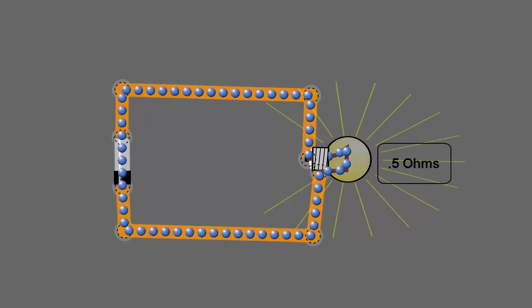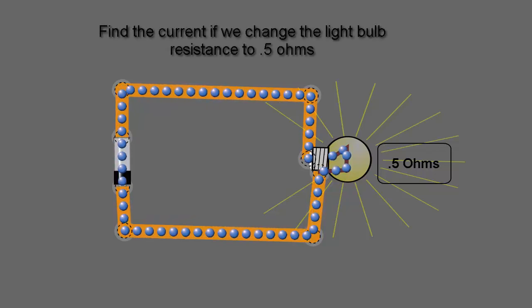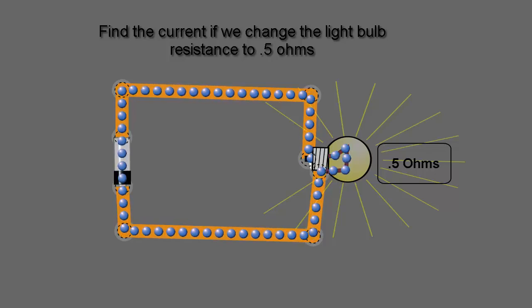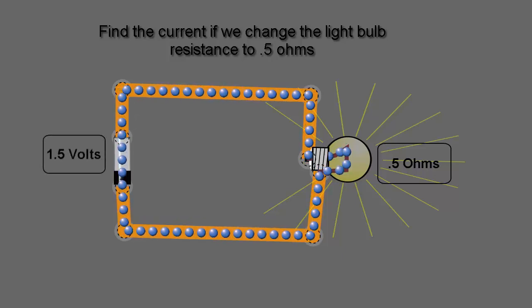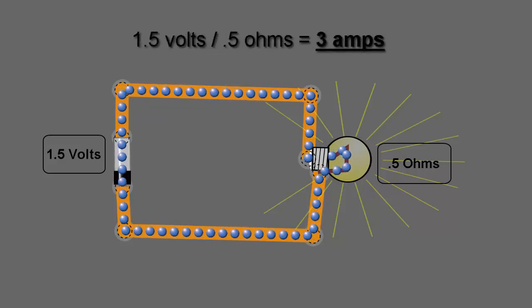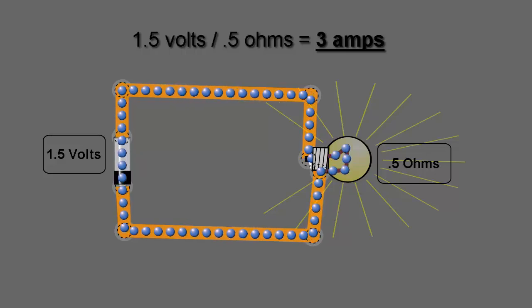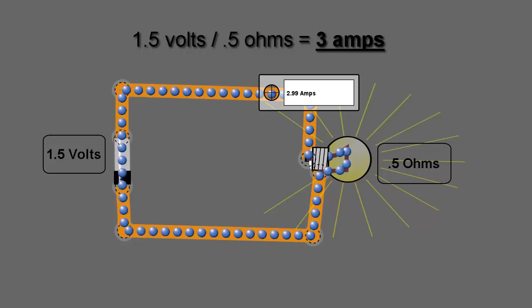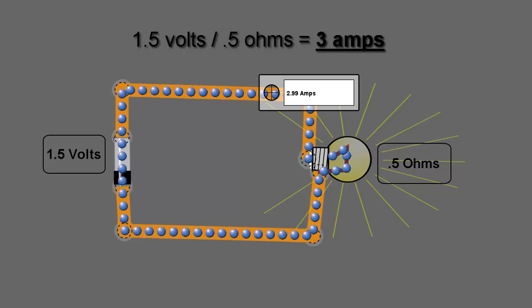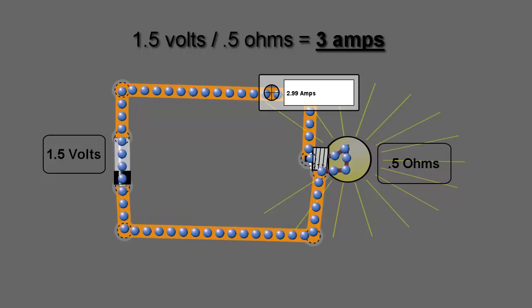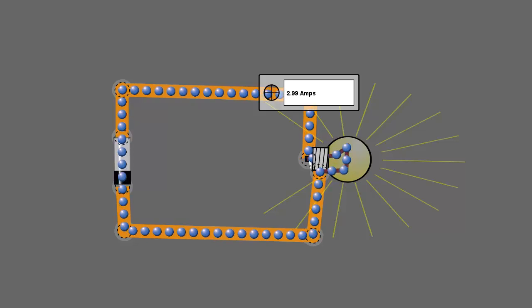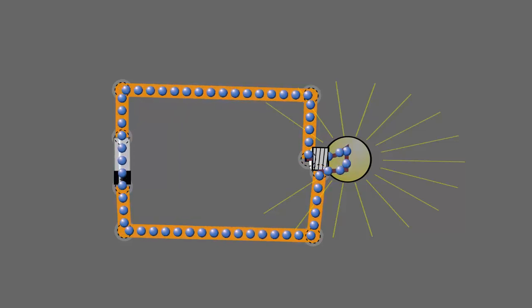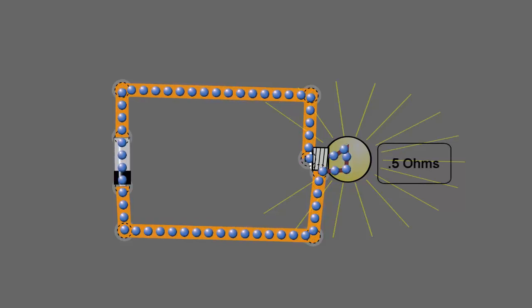So the next question is, what happens if we take the resistance of the light bulb down to 0.5 ohms? Well, if we do that, and I've already done it here, if we take this down to 0.5 ohms, then we have 1.5 volts from the battery divided by 0.5 ohms, then that should give us 3 amps. So let's measure it and see what we come up with. And if we measure it, we see the simulator comes up with 2.99 amps, close enough. I found out that the simulator is not 100% perfect. The wires in this circuit have a little bit of resistance, but we're only off by a hundredth of an amp, which isn't bad at all.